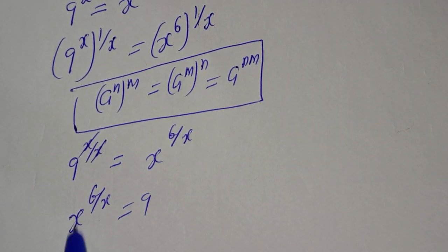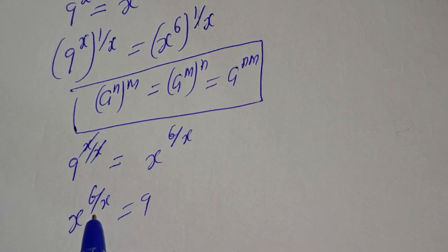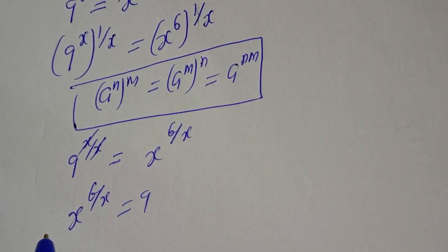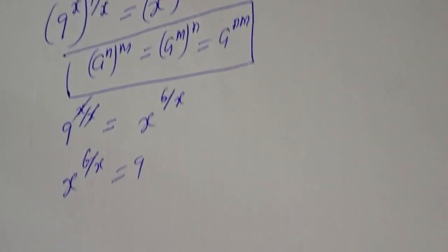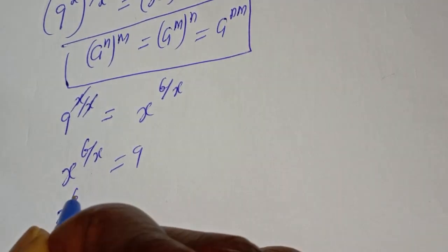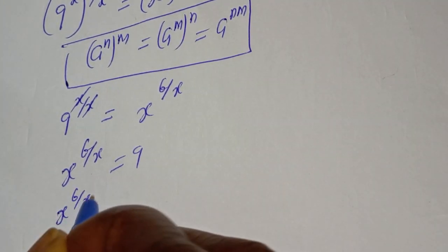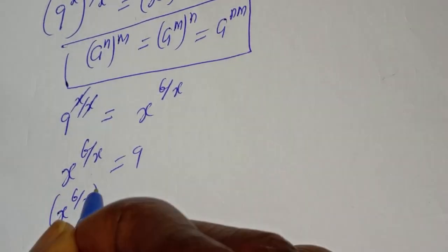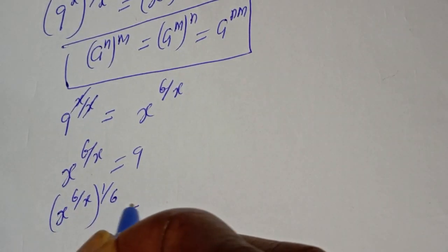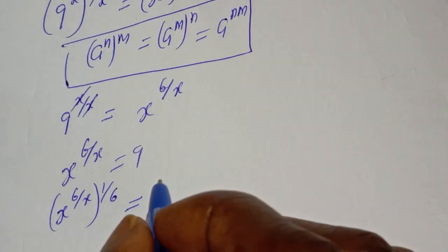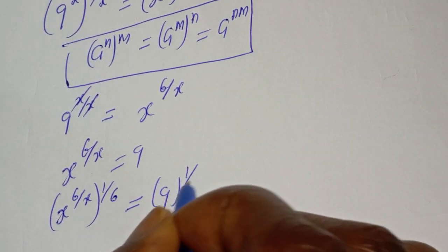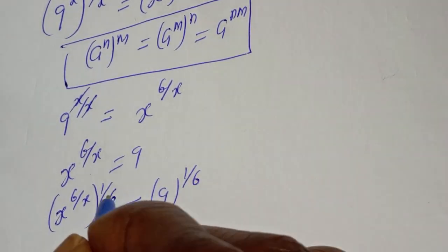Then let's multiply the exponent of both sides again by 1 over 6. Here is s raised to power 6 over s, to the power of 1 over 6, is equal to 9 raised to power 1 over 6.